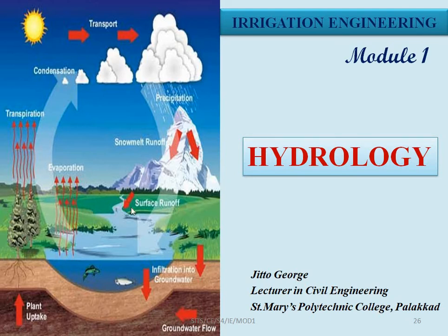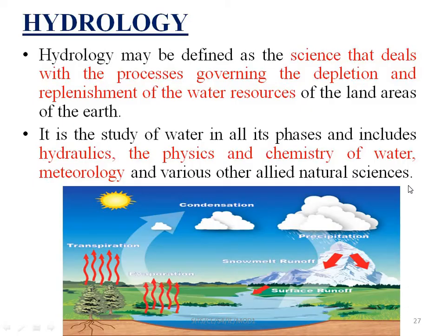We will study Hydrology in module 1 and the different types of irrigation engineering. Hydrology may be defined as a science that deals with the process governing the depletion and replenishment of the water resources of the land area of the earth. Depletion and replenishment — water resources will be restored.